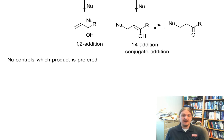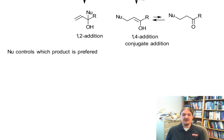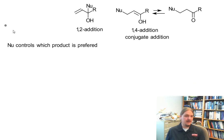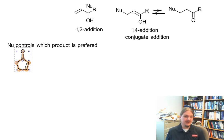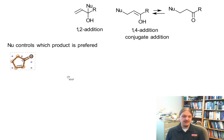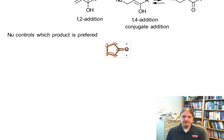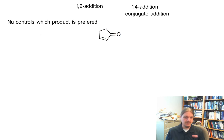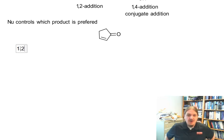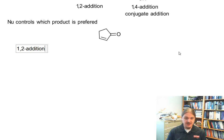I mentioned in the previous video that it's the identity of the nucleophile that controls the outcome. In all of my examples, I'm going to pick a Michael acceptor — which is what you would call a compound that reacts with nucleophiles in this kind of reaction. Here's my Michael acceptor. In each case, I'm going to show a nucleophile that prefers 1,2 addition, and then a corresponding nucleophile that prefers 1,4 addition.